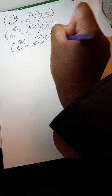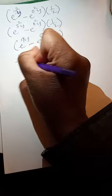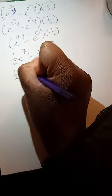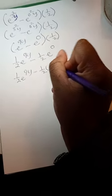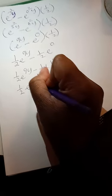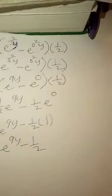Times 1 half — so 1 half e to the 9y, minus 1 half. The integral from 0 to 2 of 1 half e to the 9y, minus 1 half, dy.